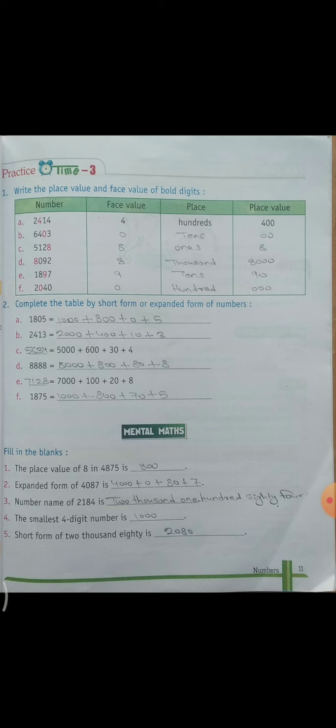Now come to c part. C part ke andar dhe rakha 5, 1, 2, 8. Ab 8 ki aapne face value and place value bitaayi hai. To 8 ki face value 8. Aur place iske kya aegha. Once. Then place value 8. So aise iske remaining part bhi karne hai.